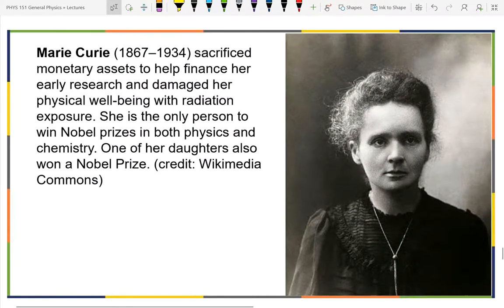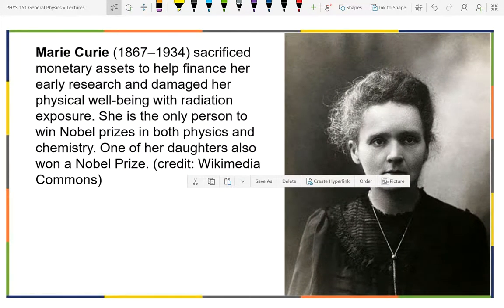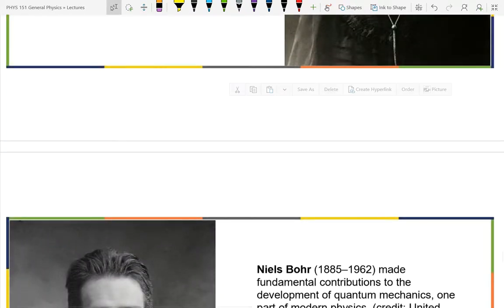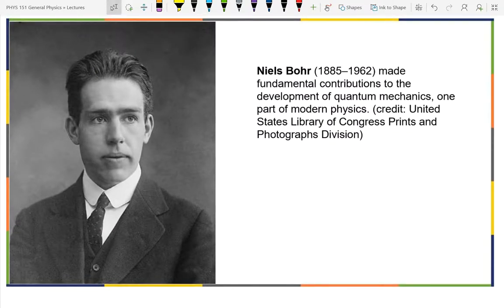Marie Curie did work with radioactive isotopes, learned a lot about radioisotopes, died from the damage done by those. I believe her husband was knocked over by a wagon. One of her daughters also won a Nobel Prize. They had three of the four people in their family won Nobel Prizes. Niels Bohr - our understanding of the atom was largely credited to him. He came up with a quantum method of explaining the atom.